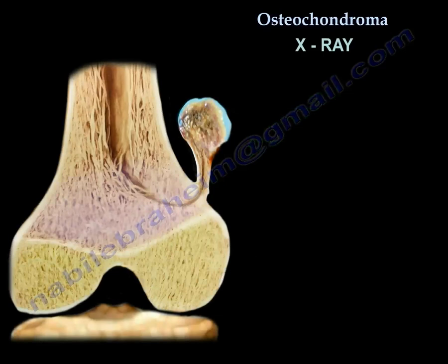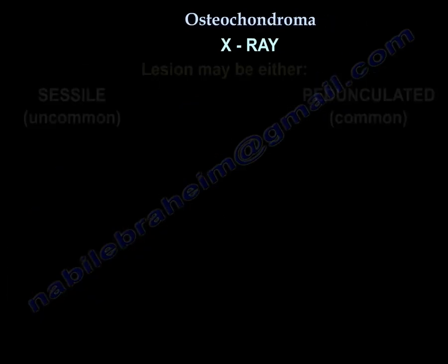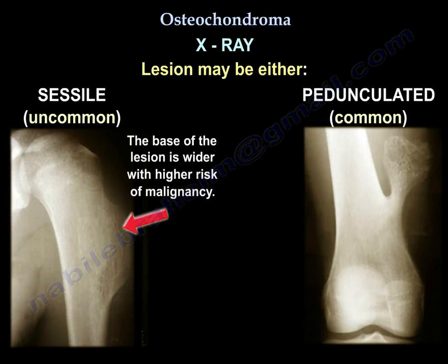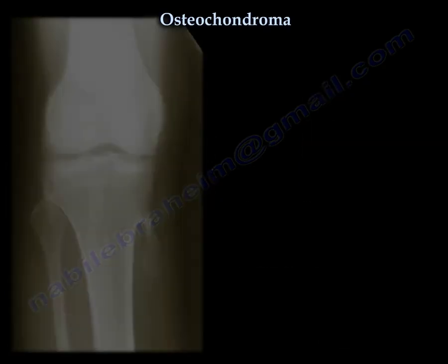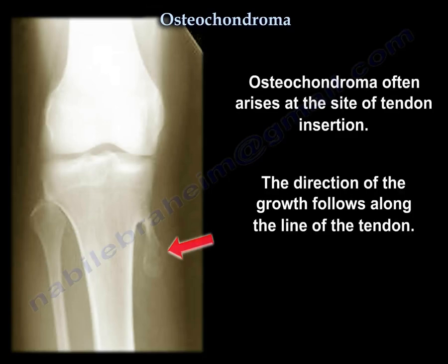On X-ray, the cortex and medullary cavity are continuous with the lesion. They can be sessile or pedunculated. The sessile type has a wider base and is associated with a higher risk of malignancy. The pedunculated type has a narrow stalk and usually grows away from the joint.